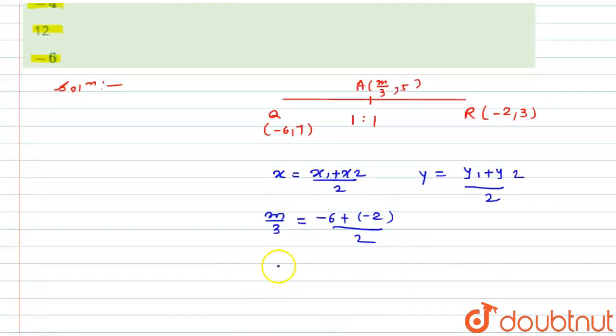Now, I will solve this to get the value of M. So it will become M/3 = (-6 - 2)/2. -6 minus 2 is -8, so -8 divided by 2 is -4.